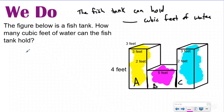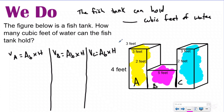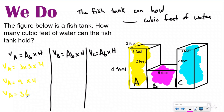Prism A, prism B, prism C. Volume of prism A equals area of the base times the height, volume of prism B equals area of the base times the height, volume of prism C equals area of the base times the height. For prism A, using the 'peace sign' vertex, volume of A equals 3 times 3 times 4. Three times 3 is 9, and I have 4 layers of 9, which is 36 cubic feet.